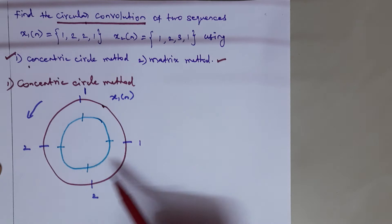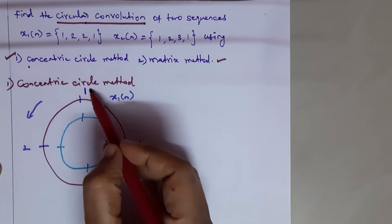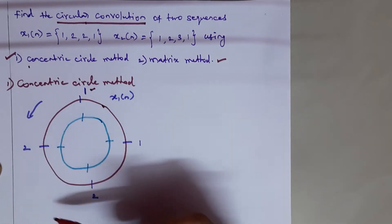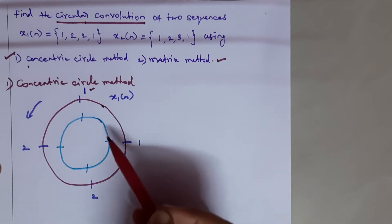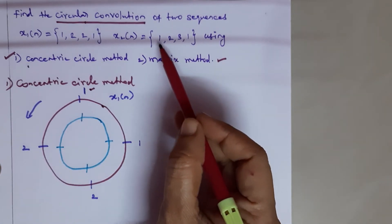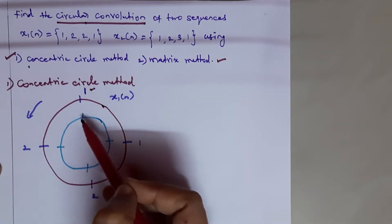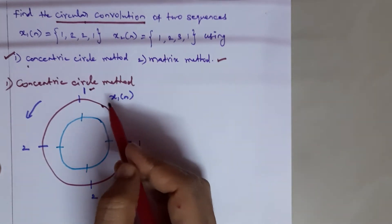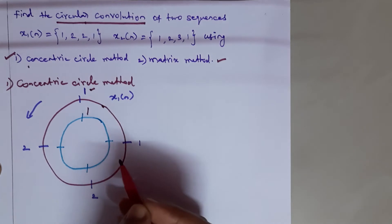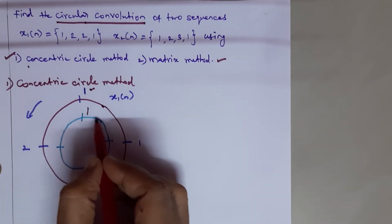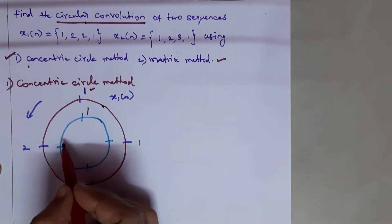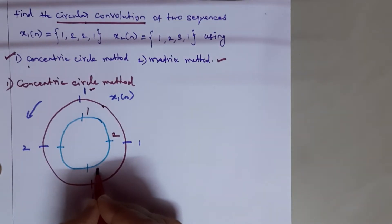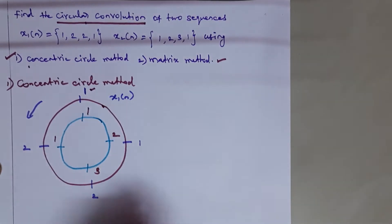For the outer circle, we start at the same position and write 1, 2, 2, 1 in anti-clockwise direction. For the inner circle, we start at the same position as X1(n), but we place X2(n) values in the clockwise direction. So in the inner circle: 1, then clockwise 2, then 3, then 1.